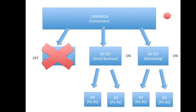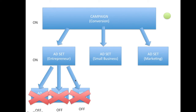Now what happens if we just turn off one ad? The campaign is on, the ad sets are on, but we decide to turn off one individual ad. Everything else is still running. The ad set still has multiple ads — ad number two testing one picture and ad number three testing another picture. This one ad is off, maybe because we didn't like its results, but the other two ads are still running and still being delivered.